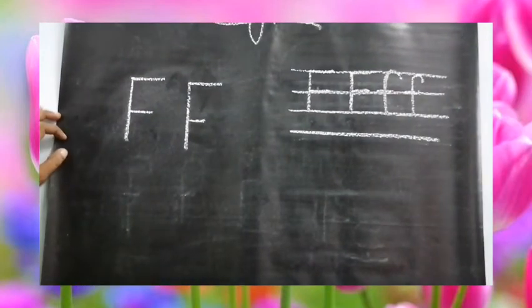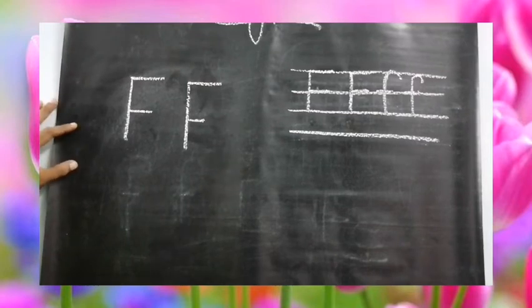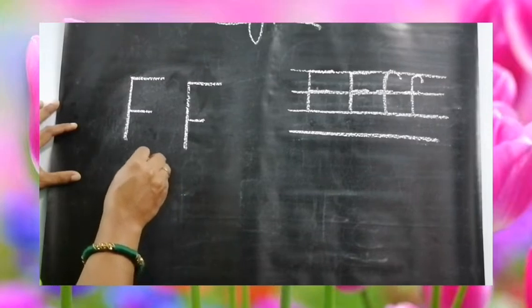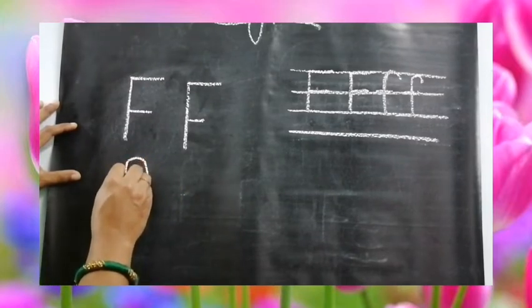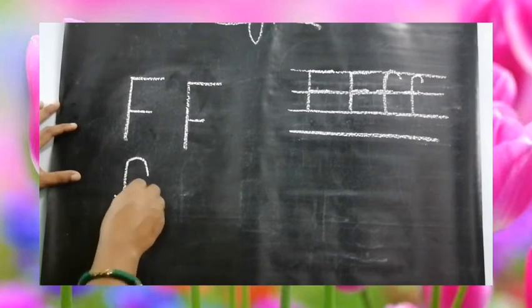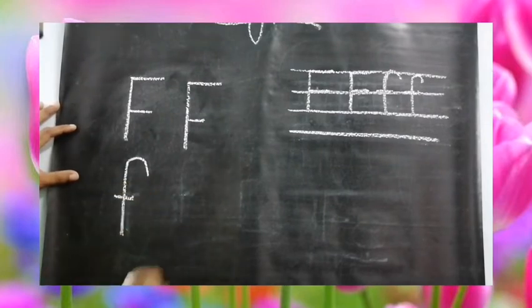This is mama or capital letter F. And for writing baby we need small reverse row and one standing line and small sleeping line like this. This is baby F.